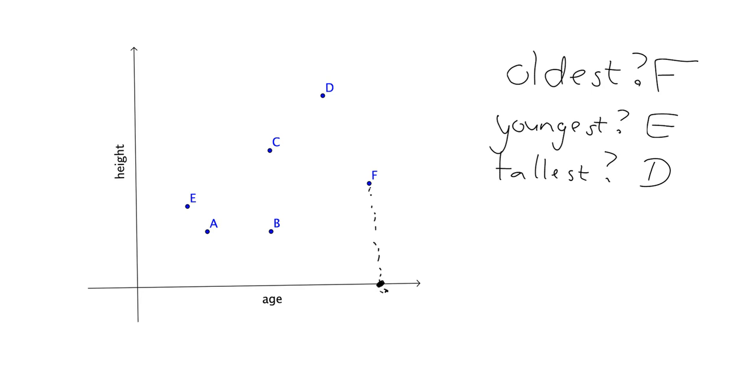Let's try another one. Who's the same age as person B? Well, let's have a look. Where's person B? They're over there. Age is on the horizontal, so it's how far to the right you are. So who's also the same distance to the right?